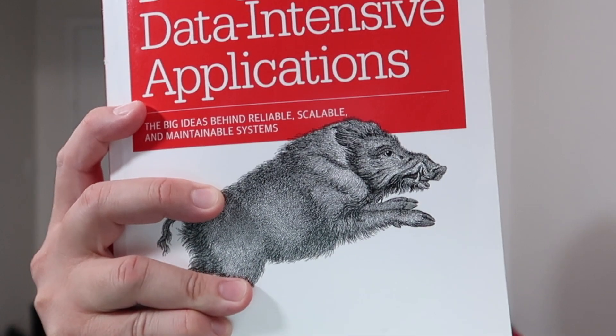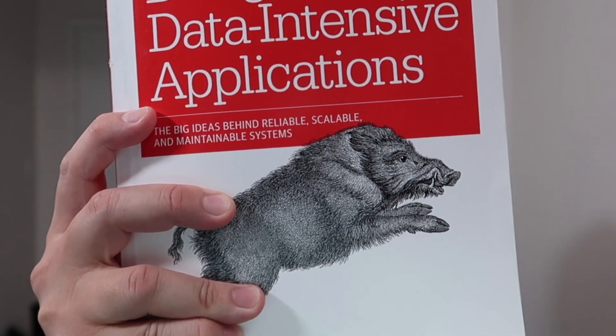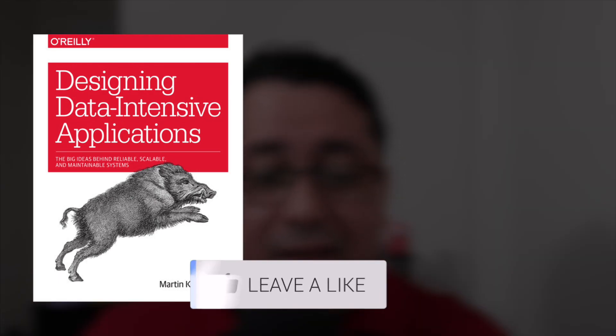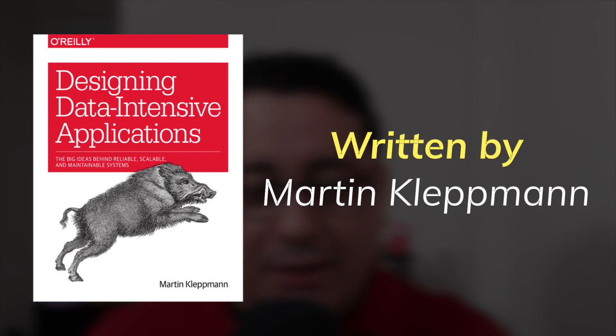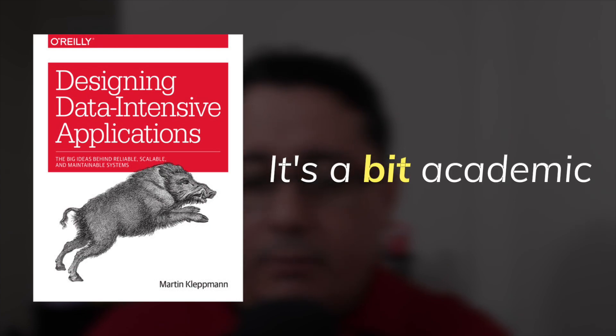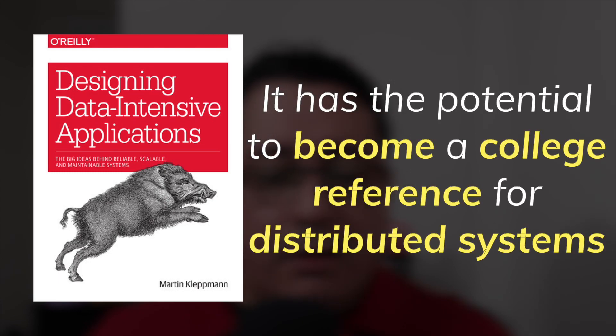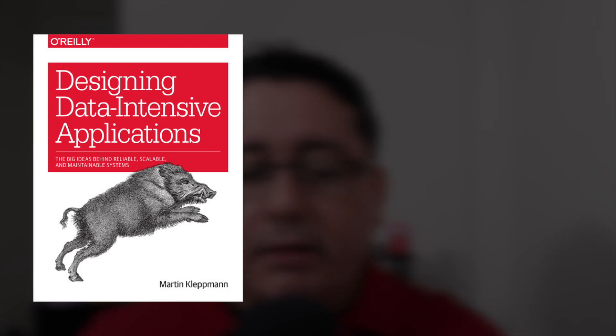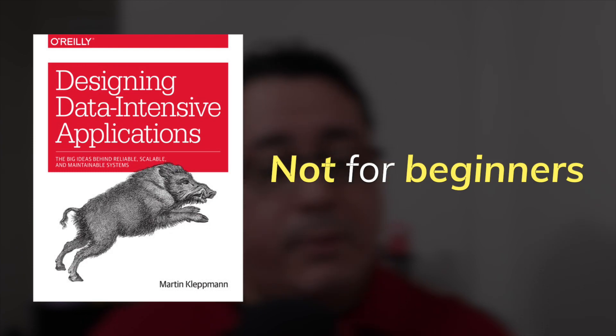Last but not least, we have Designing Data-Intensive Applications: The Big Ideas Behind Reliable, Scalable, and Maintainable Systems. This book is heavy — and not because of the weight. This book is definitely a heavy hitter. However, be aware, it is a bit academic, and you might find it dry and hard to read from time to time. But I assure you, if you take the time to read everything, you are going to learn a lot. I think this book could be used as a main reference for distributed systems where concepts and theory are introduced first, and then the actual implementation with real-life examples is presented. It even compares similar technologies. However, it's not for beginners — you need a bit of experience, otherwise you won't get the best of it. Designing Data-Intensive Applications complements all the other books I presented before.